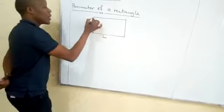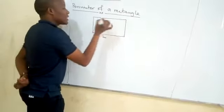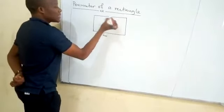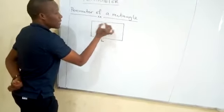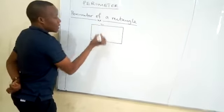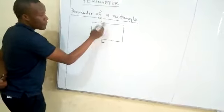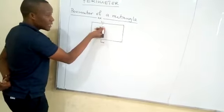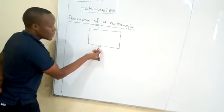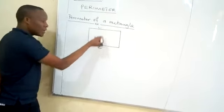This one is also length, and we also represent it by the letter L — it means they are equal. For example, if one side is one centimetre, the other is also one centimetre.